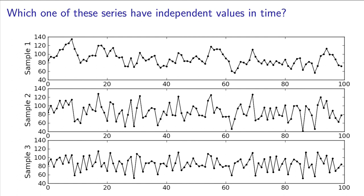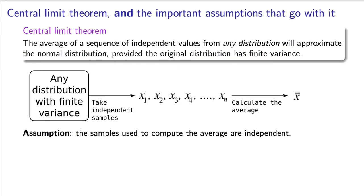So let's recap here. The average of a sequence of numbers will be normally distributed, provided we meet two conditions. The samples are independent, and the samples come from a distribution of finite variance.